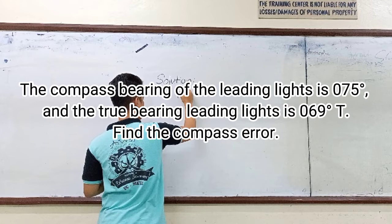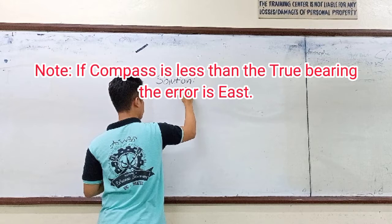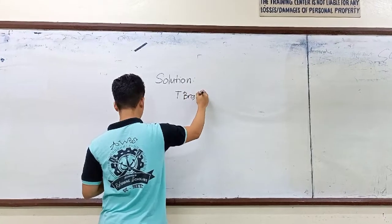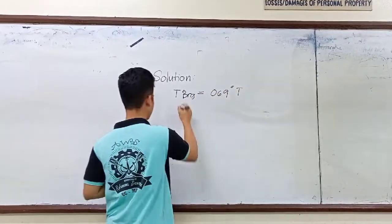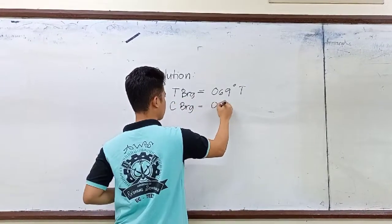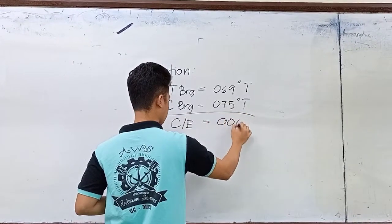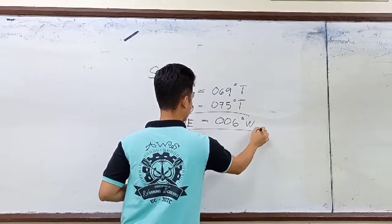The compass bearing of the leading lights is 75 degrees and the true bearing of the leading light is 69 degrees true. Find the compass error. The rule to remember: if compass is less than true bearing the error is east; if compass is greater than true bearing the error is west. Since compass bearing 75 is greater than true bearing 69, we subtract to get a compass error of 6 degrees west.